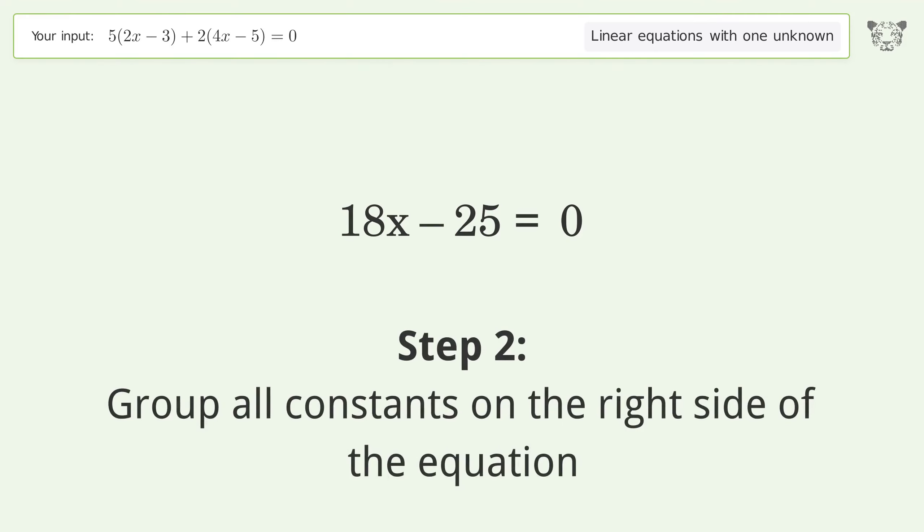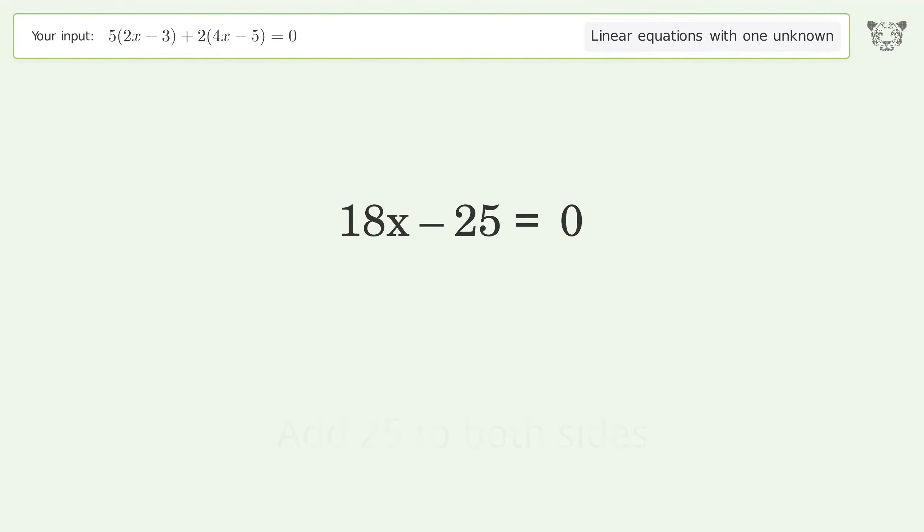Group all constants on the right side of the equation. Add 25 to both sides. Simplify the arithmetic.